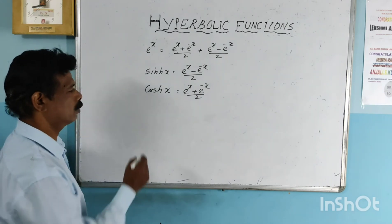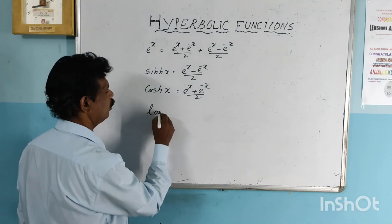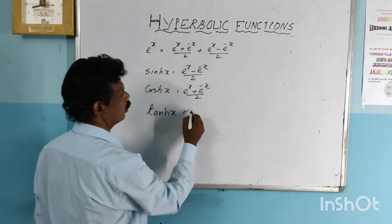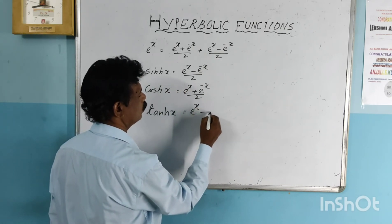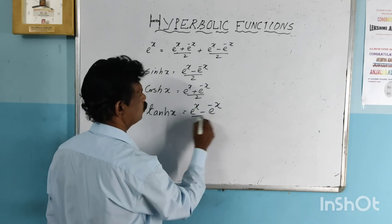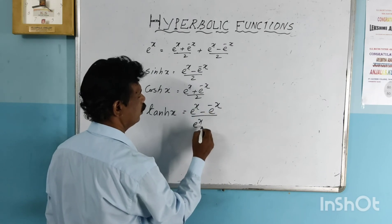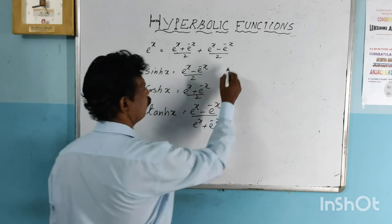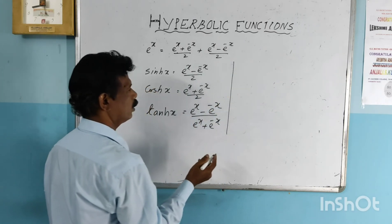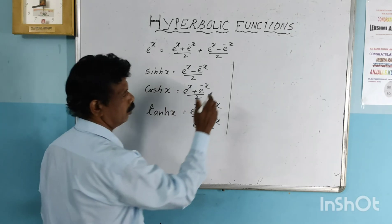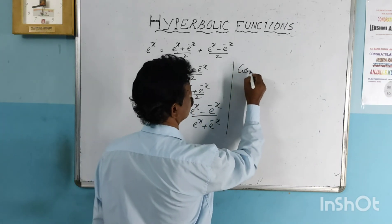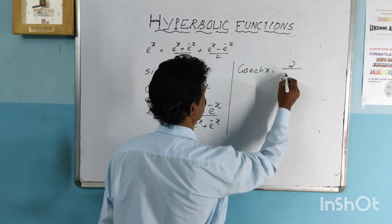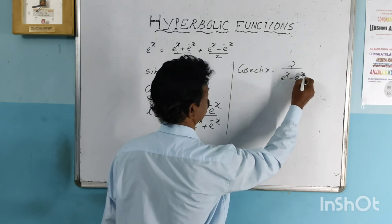Then, what is tanh(x)? tanh(x) means sinh(x) divided by cosh(x). So tanh(x) equals e raised to x minus e raised to minus x, divided by e raised to x plus e raised to minus x. And cosech(x) means the reciprocal of sinh(x), so cosech(x) equals 2 divided by e raised to x minus e raised to minus x.